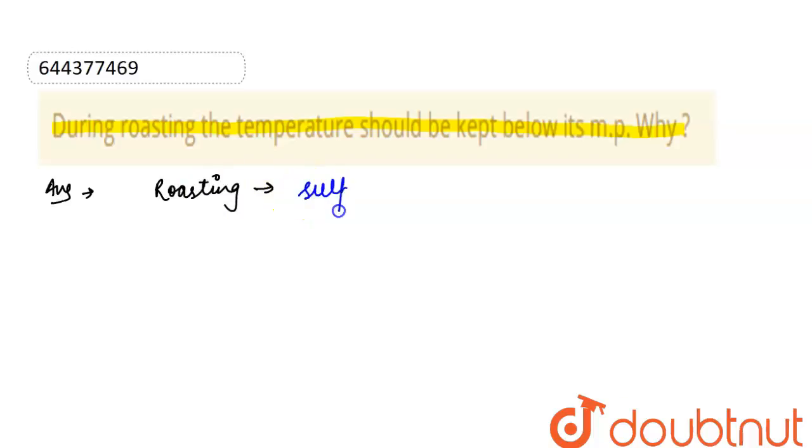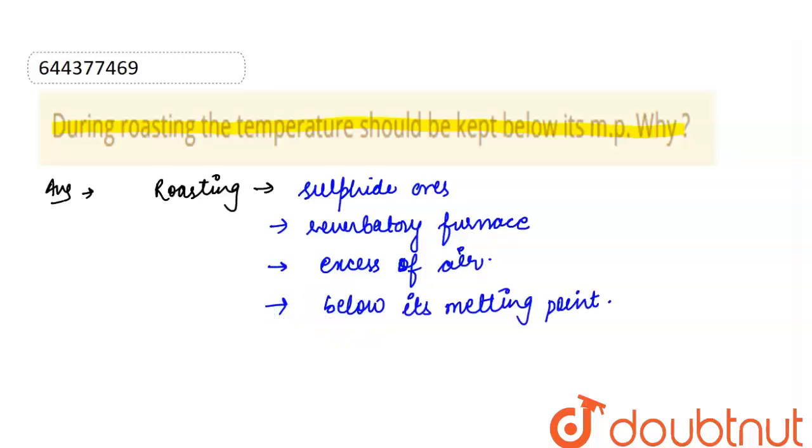In the reverberatory furnace, sulfide ores are heated or roasted in excess of oxygen or excess supply of air below its melting point. In the process of roasting, ore changes to its oxide.